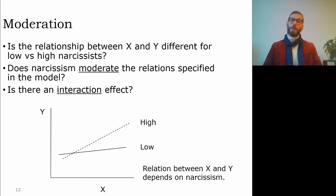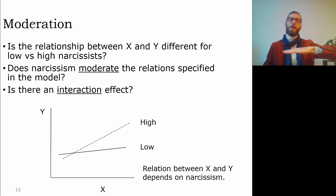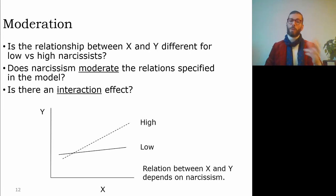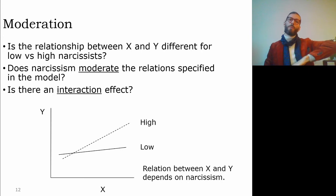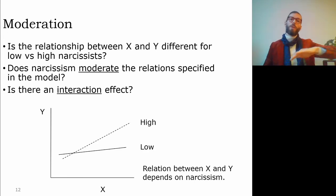Does narcissism moderate the relationship between rejection and problematic smartphone use? Is there an interaction effect between narcissism and rejection? If the relationship between X and Y depends on narcissism, we see a low narcissism group with a near-zero slope for X on Y, and a high narcissism group with a positive effect. With a continuous moderator there is a continuous fan of lines; with a dichotomous moderator there are just two separate regression lines.